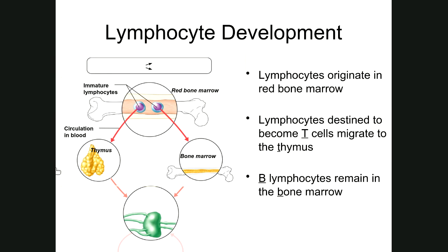As we get more into the adaptive system, you're going to start hearing a lot about B cells and T cells. B cells are also known as B lymphocytes, and T cells are also known as T lymphocytes. A lymphocyte is a type of cell you've learned about before — it's actually a type of blood cell, and because these are blood cells, like all other blood cells, they actually originate in the bone marrow.